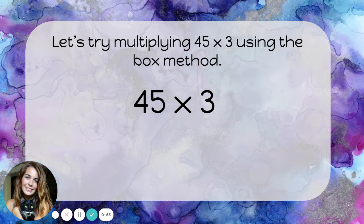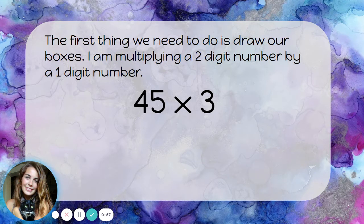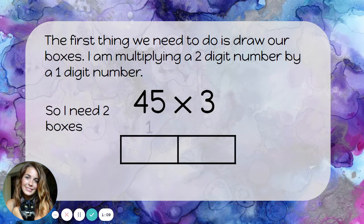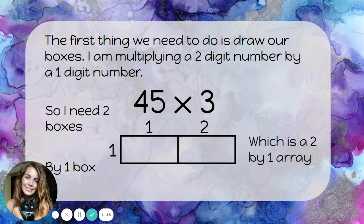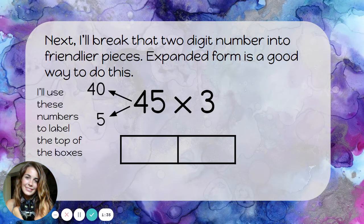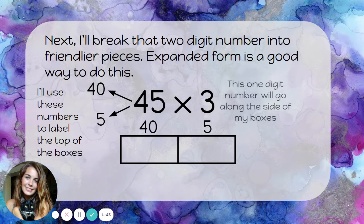Let's try multiplying 45 times 3 using the box method. The first thing we need to do is draw our boxes. I am multiplying a two digit number by a one digit number, so I need two boxes by one box, which is a two-by-one array. Next, I'll break that two digit number into friendlier pieces. Expanded form is a good way to do this, so I'm going to break apart 45 into 40 and 5. I'll use these numbers to label the top of the boxes — 40 and 5. This one digit number, 3, will go along the side of my boxes.